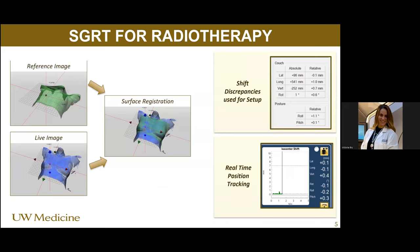What does that mean for radiotherapy? In radiotherapy, we want our patients to be in a specific position because we plan a whole treatment based on that one position. The goal is to have a reference image of our patient in treatment position, and then compare that to a live image of our patient on the treatment table. A registration occurs where the system overlays the reference image to the live image, provides shift discrepancies, and we can use this for setting up a patient and for real-time persistent tracking throughout the duration of their treatment.